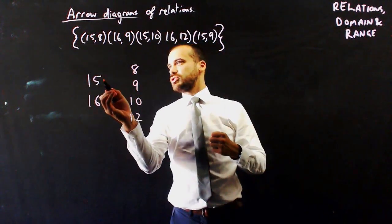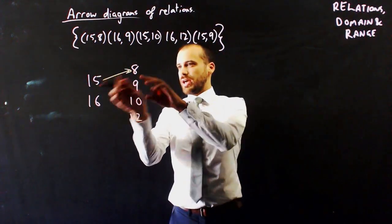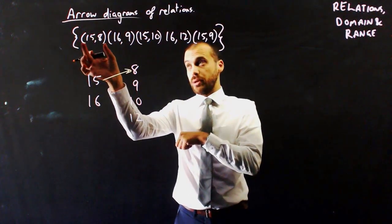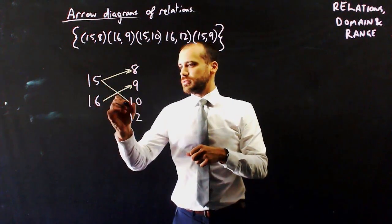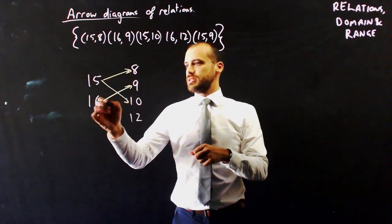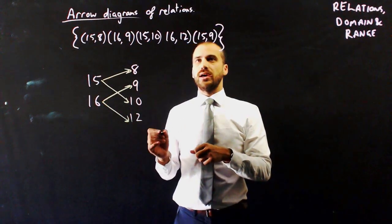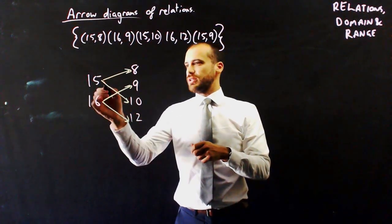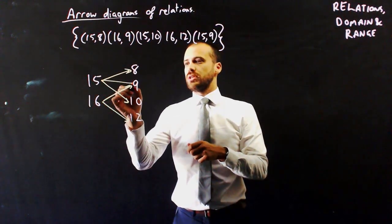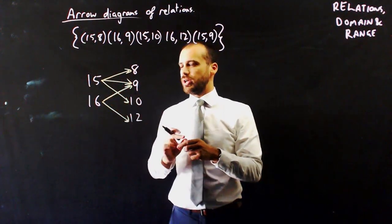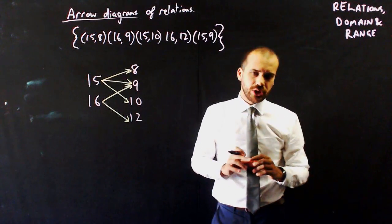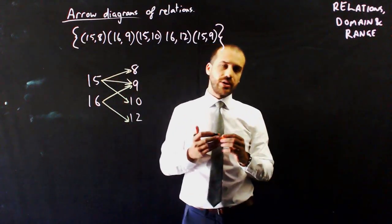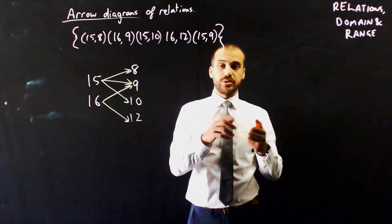And then I can draw an arrow diagram joining the x's to the y's. So 15 gets joined to 8, and so that arrow diagram represents that ordered pair. 16 to the 9, 15 to the 10, 16 to the 12, and 15 to the 9. Okay, so I'm not going to talk too much about this. That's a way to represent a relation.